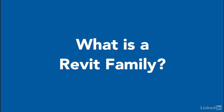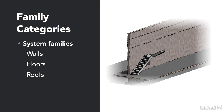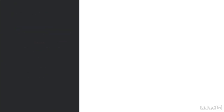That being said, there are a few different types of families I'd like to explore. The first category would be a system family. System families are going to consist of walls, floors, roofs, stairs, or ramps.